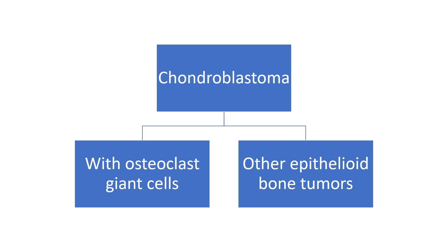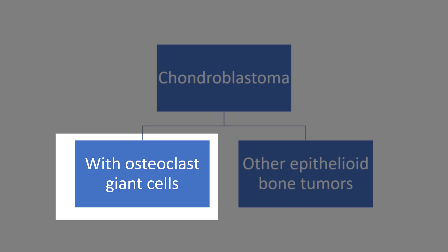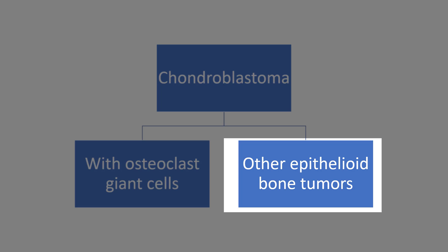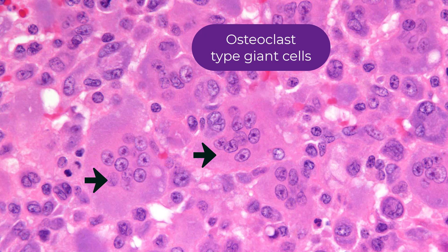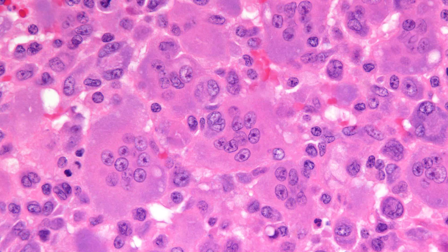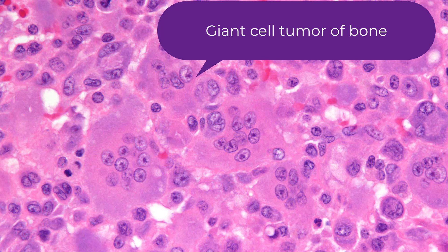The differential diagnosis really depends on whether you see a lot of osteoclast-type giant cells or predominantly those epithelioid cells. If you see a large number of osteoclast-type giant cells, the number one entity to consider is giant cell tumor of bone. The easiest way to tell chondroblastoma from giant cell tumor of bone is by looking at the mononuclear cells — they lack the characteristic nuclear groove that you see in chondroblastoma.